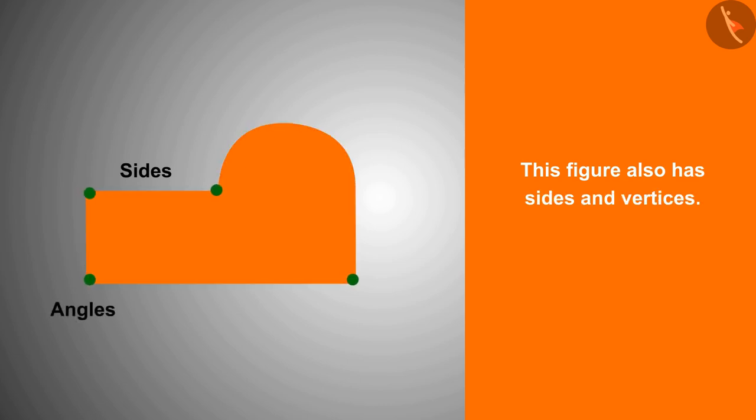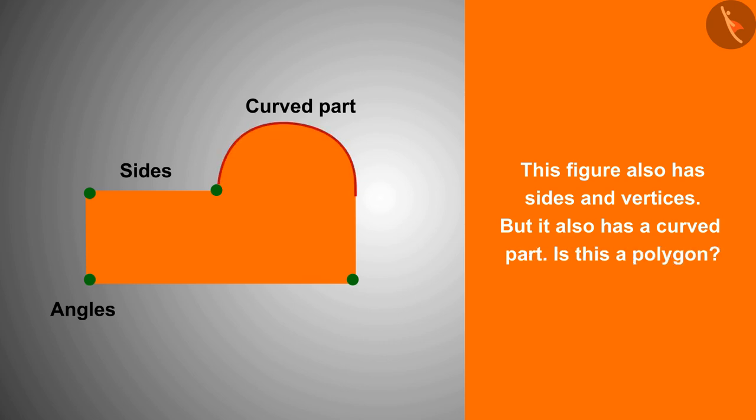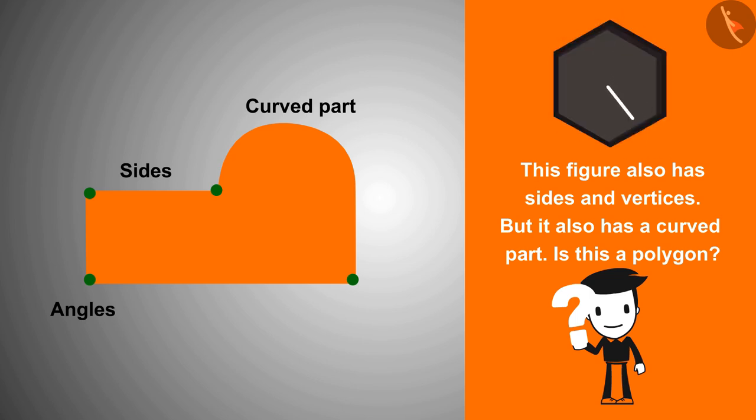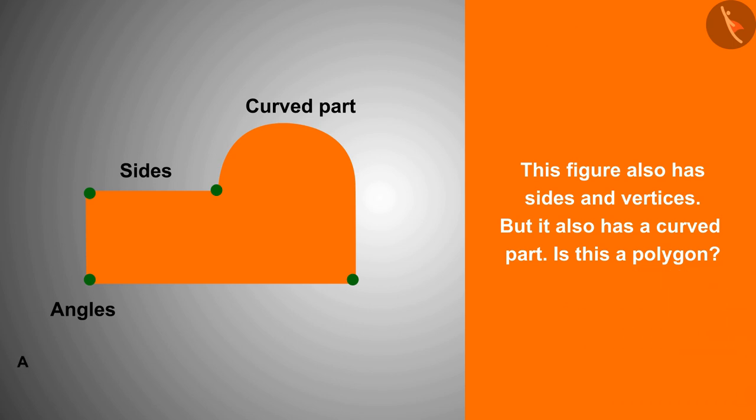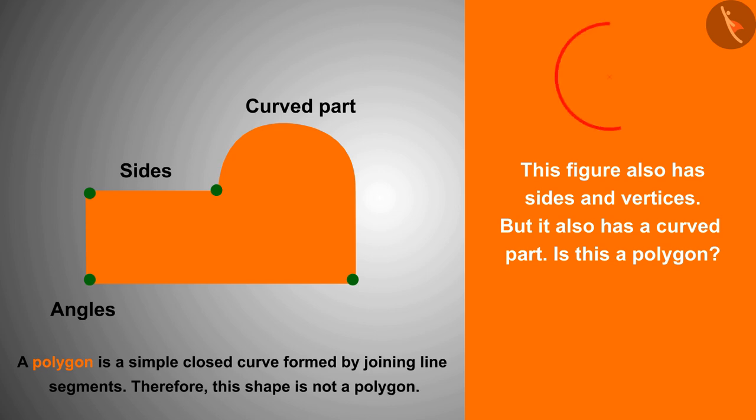This looks something interesting. It is a simple closed curve which also has sides and vertices, but it also has a curved part. Can it be a polygon with this curved part? We know that a polygon is a simple closed curve formed by joining line segments, so this shape is not a polygon.